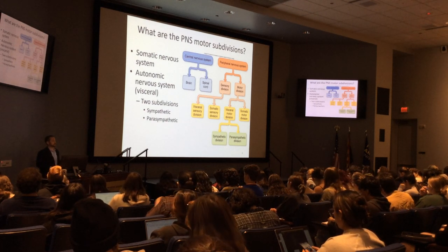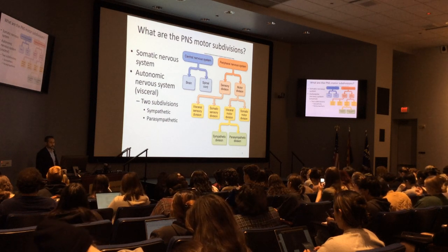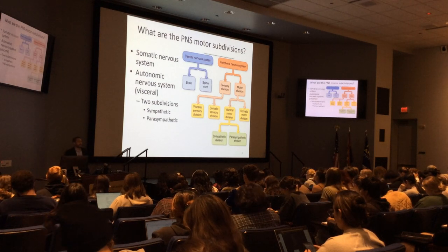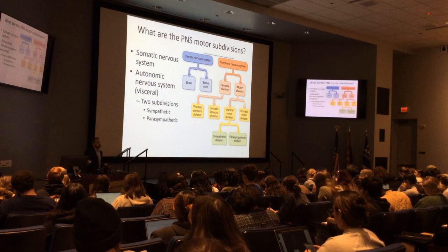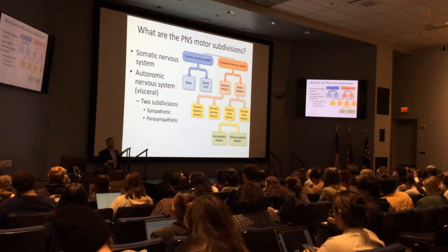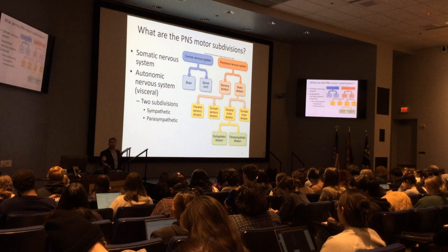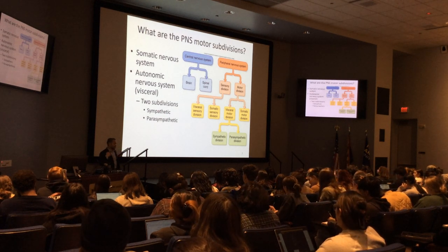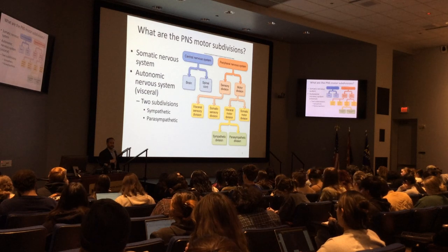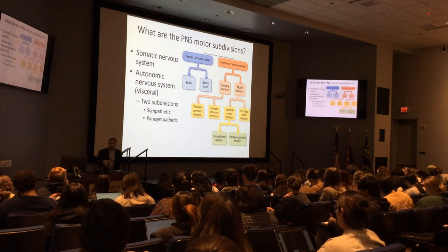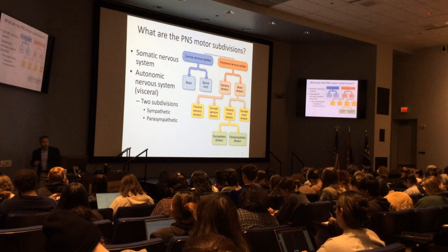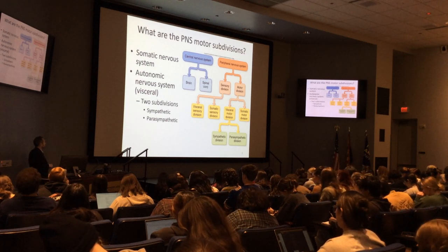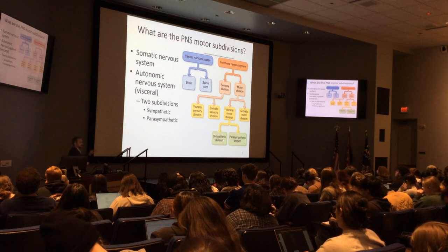The somatic nervous system is under voluntary control — central nervous system to skeletal muscles. You hear a sound, that's a sensation. You send a signal to the brain. The brain says that sounds like a bear, and sends a signal to the muscles of the lower limb: run away. Somatic — under voluntary control. Autonomic, also referred to as visceral, is involuntary control. Autonomic and visceral are interchangeable terms.